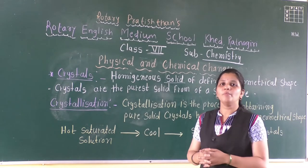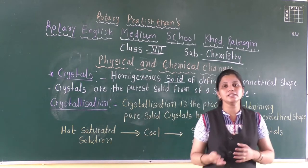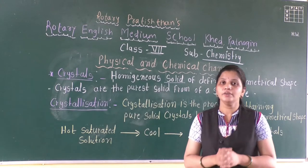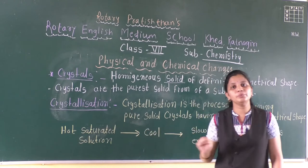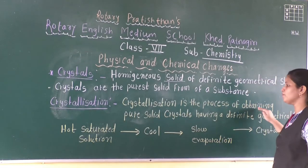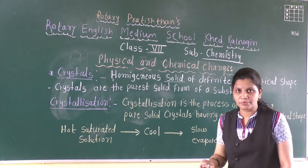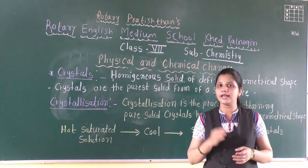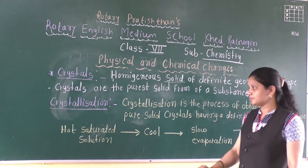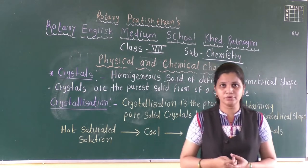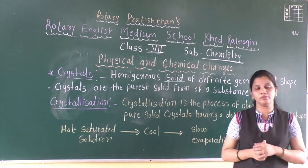So how do crystals form? We obtain common salt from the sea by evaporation method, but those crystals are not in the purest form. So for that we have to perform one experiment — one method — that method is known as crystallization. So what we are going to do in this method: crystallization is the process of obtaining pure solid crystals having a definite geometrical shape.